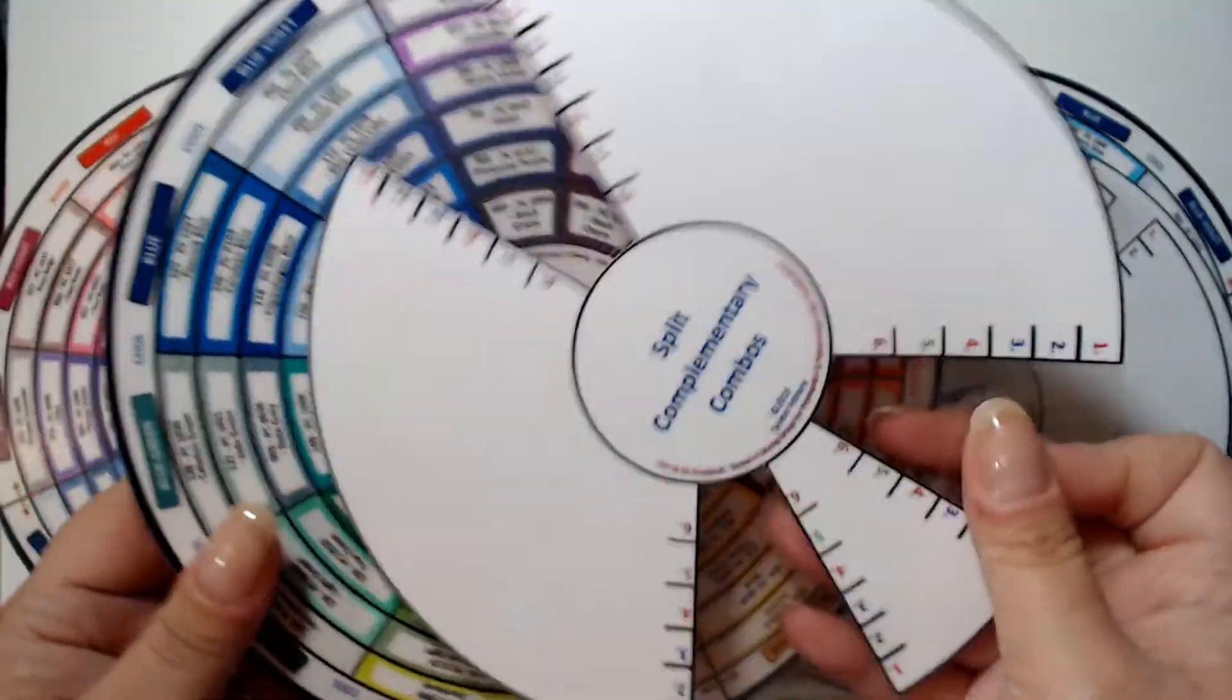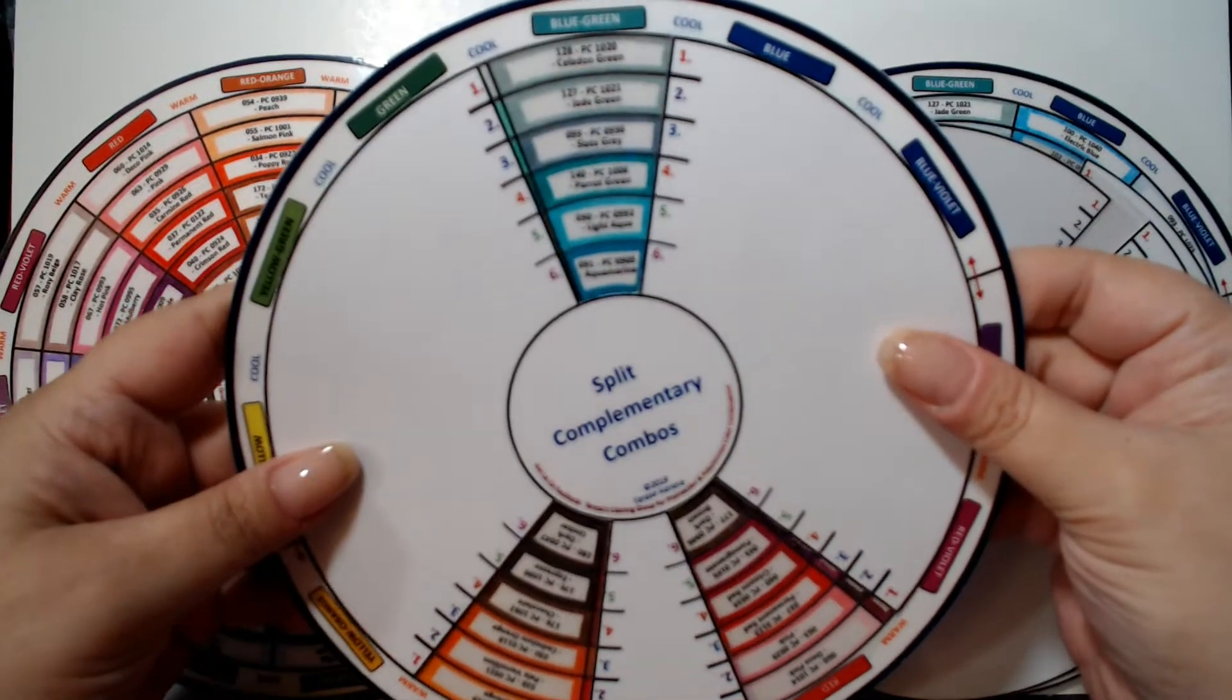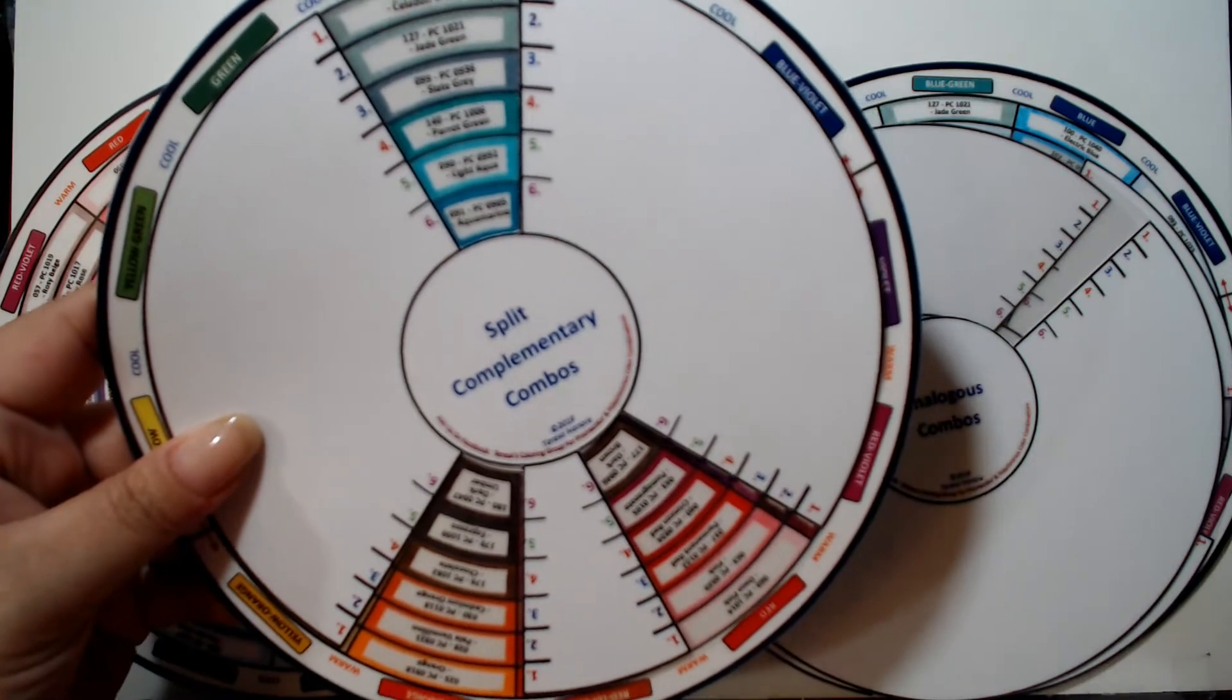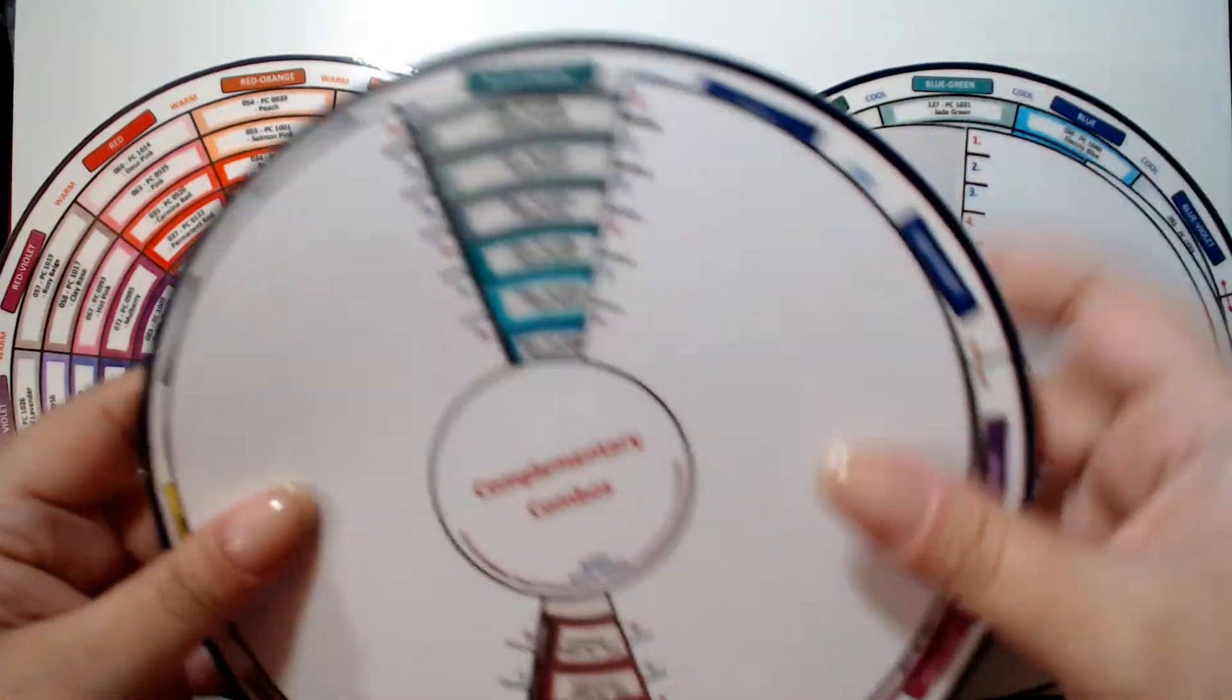And then we've got the split complementary. Same thing. You've got three different colors that will match nicely together on your artwork. And then back to the basics, if you want to just do two colors at a time, you've got the complementary template.